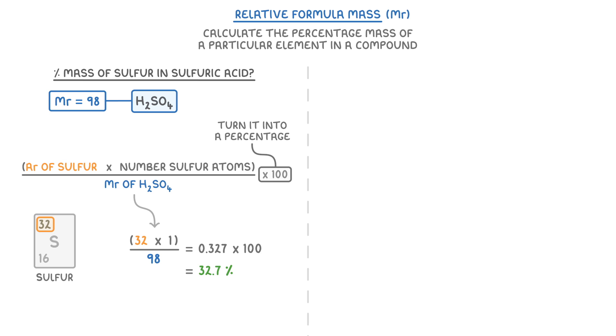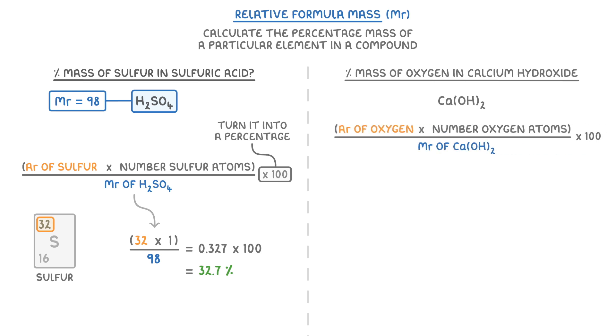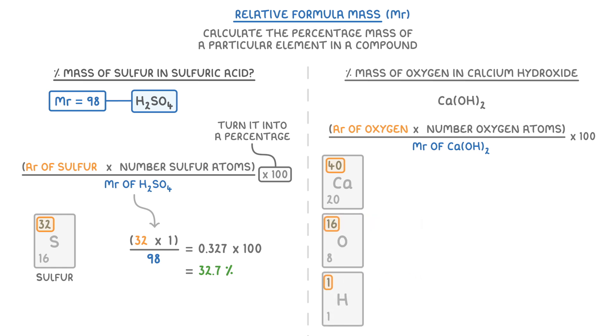Before we finish, let's find the percentage mass of oxygen in calcium hydroxide, which has the formula Ca(OH)2. The first thing to do is to recall our formula, and check the periodic table to find the relative atomic mass of each element. So 40 for calcium, 16 for oxygen, and 1 for hydrogen.